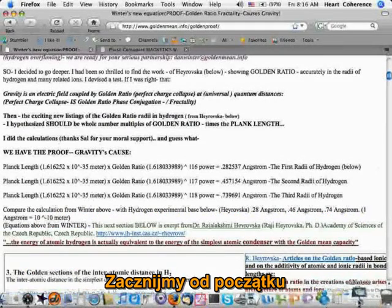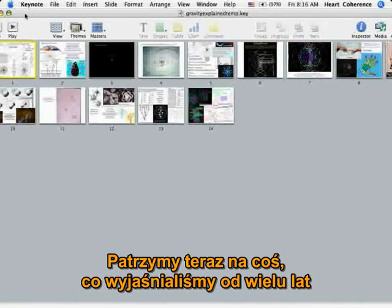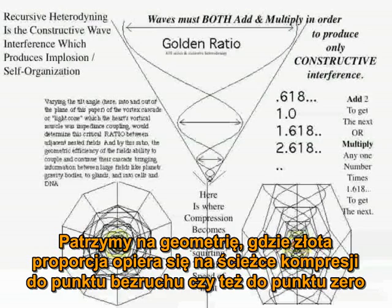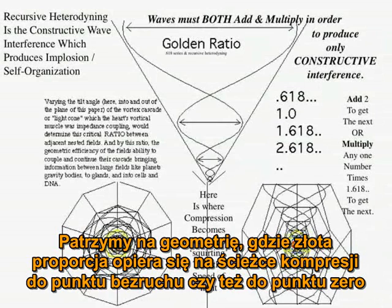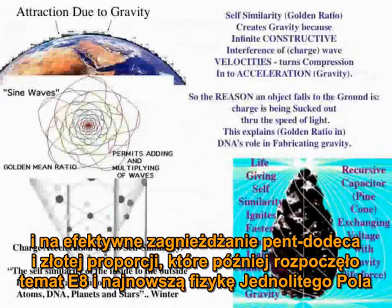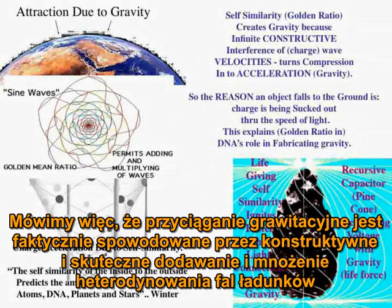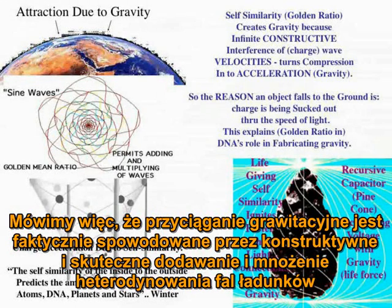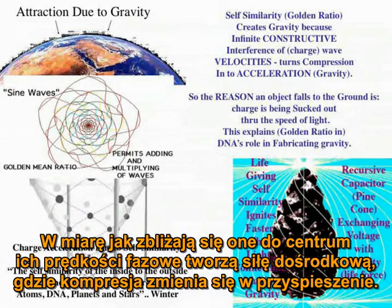Let's start at the beginning. We're looking at what we've been explaining for many years: this geometry where the golden ratio is basically a compression path into a still point or zero point, and this effective nesting of the pent, the dodeca, and golden ratio — which later became the E8 story and the latest unified field physics. What we've been saying is that the attraction due to gravity is actually caused by the adding and multiplying constructively of the heterodynes of waves of charge, and as they approach center, the phase velocities create a centripetal force where compression turns into acceleration.